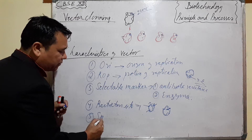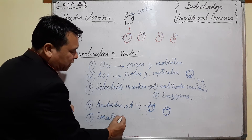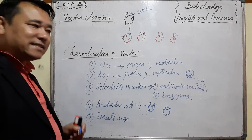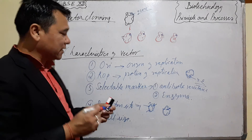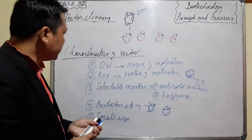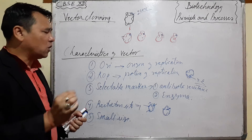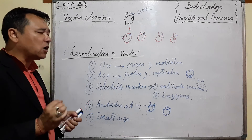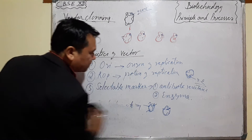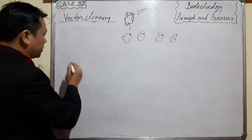The fifth characteristic is that the vector or plasmid must be small in size. So these are the characteristics of a vector. Now we will study about one plasmid — one vector of E. coli.